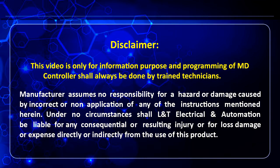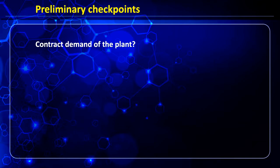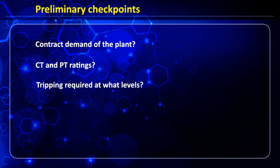Before we begin, some preliminary checkpoints we should always know before programming are: first, the contract demand of the plant; second, the CT and PT ratings given to the meter; third, at what levels we require tripping; and what is the demand period. In India we have either a 15-minute or a 30-minute demand period.